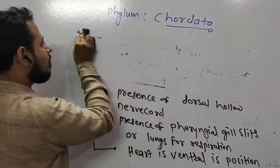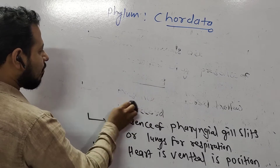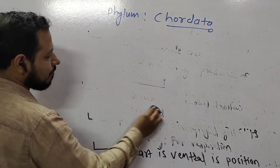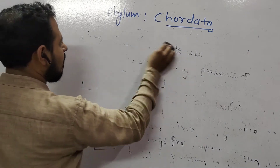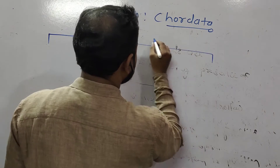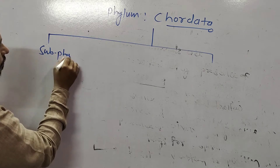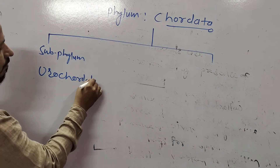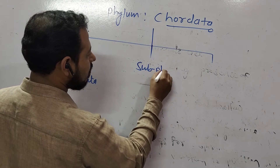Phylum Chordata is further classified with the help of important features. It is divided into three sub-phyla. The sub-phyla include Urochordata, Cephalochordata, and Vertebrata.